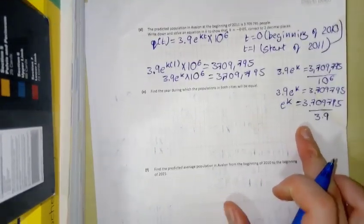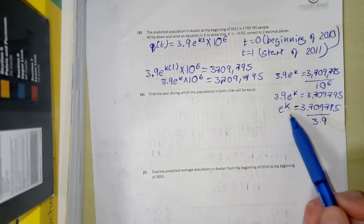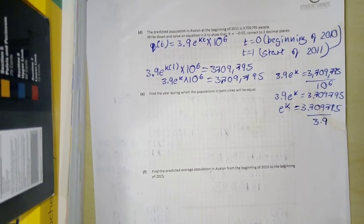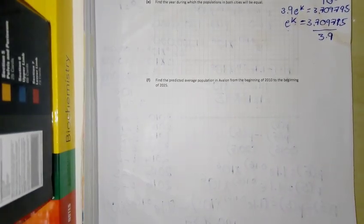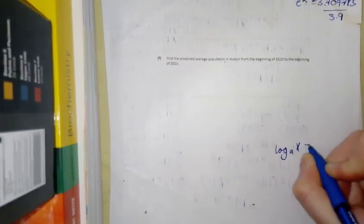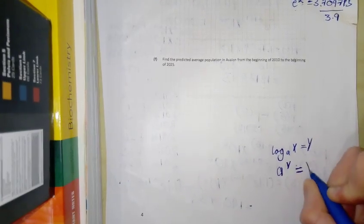So when I have an expression like this, I'm not able to solve it for K right now because it's e to the power of K. But I can rearrange this to get a log. So the way I can move from an exponential to a log, if I have an equation in the form log base A of X equals Y, we can write that as A to the power of Y equals X.